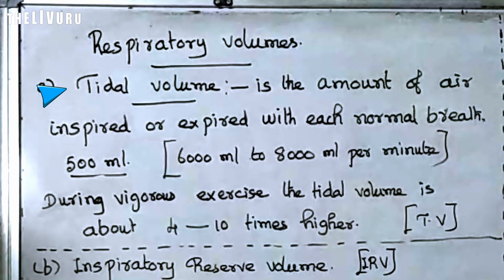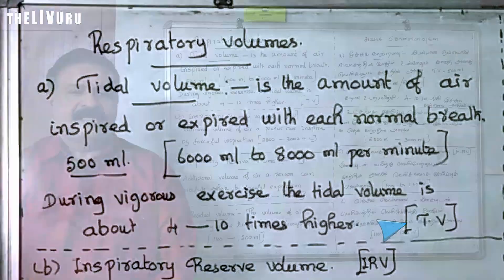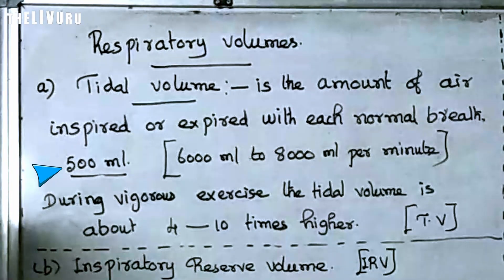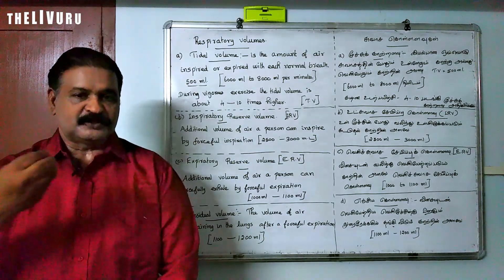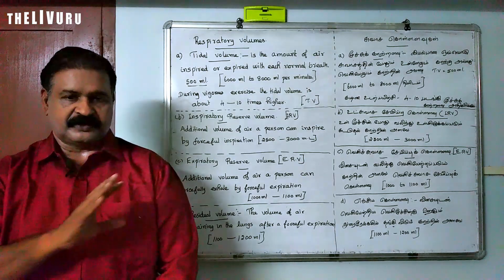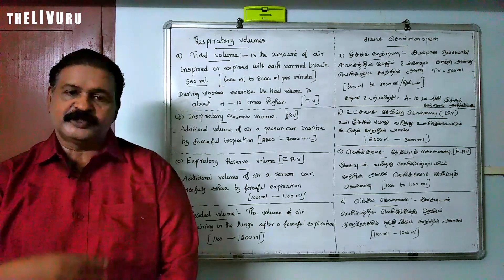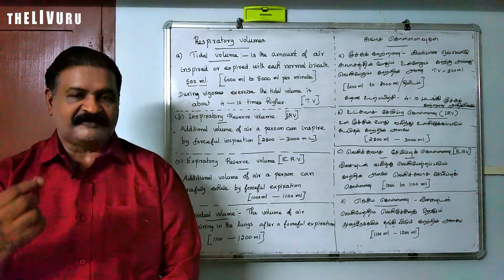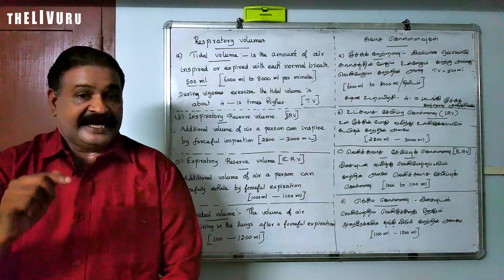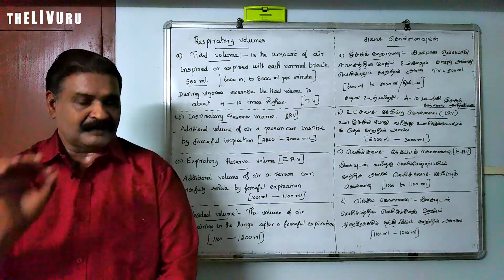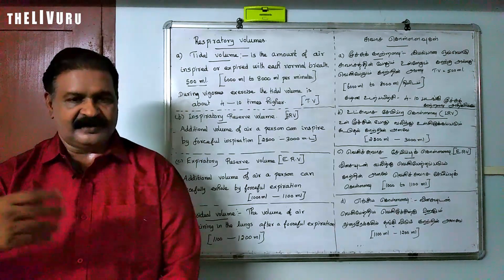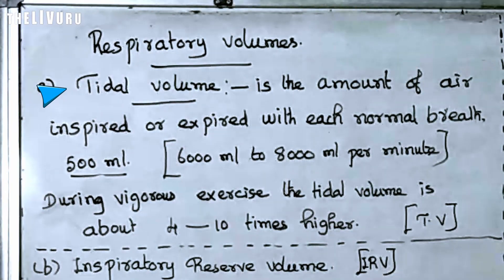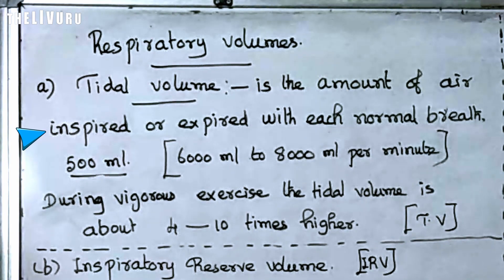Tidal volume can be expressed as TV. TV means tidal volume. That is nothing but an ordinary person moves about 500 mL of air in and out during ordinary inspiration and expiration. This is the tidal volume — the amount of air in and out with each normal breath.